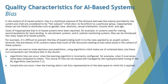Bias can be introduced into many types of AI-based systems. For example, it is difficult to prevent the bias of an expert being built into the rules applied by an expert system. However, the prevalence of ML systems means that much of the discussion relating to bias takes place in the context of these systems. ML systems are used to make decisions and predictions using algorithms which make use of collected data, and both of these components can introduce bias into the results.